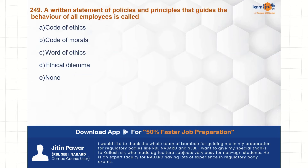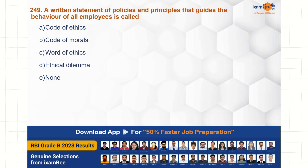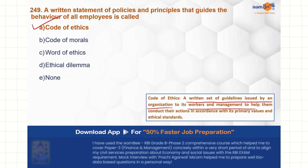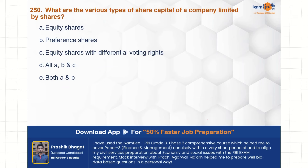A written statement of policies and principles that guides the behavior of all employees is called: code of ethics, code of moral, word of ethics, or ethical dilemma? Code of ethics is the right answer. Code of ethics ka matlab hota hai ek written set of guidelines issued by the organization to its workers and management to conduct their operations in accordance with the primary values and ethical standards of the organization.